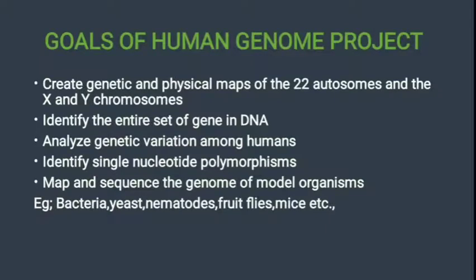Next we see the goals of the Human Genome Project. The goals include: first, create genetic and physical maps of the 22 autosomes and the X and Y chromosomes; identify the entire set of genes in DNA; analyze genetic variation among humans; identify single nucleotide polymorphisms; and map and sequence the genomes of model organisms such as bacteria, yeast, nematodes, fruit flies, and mice.